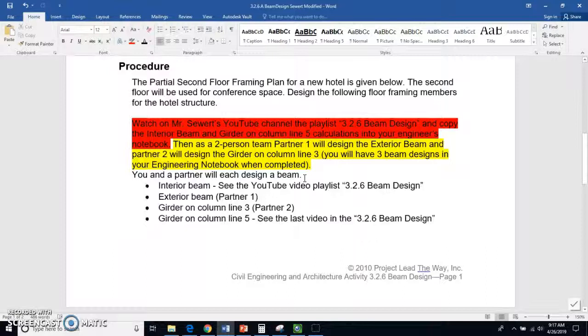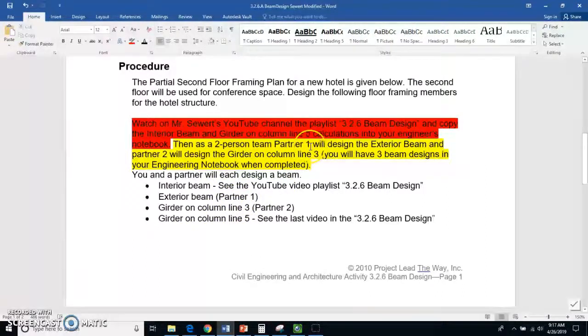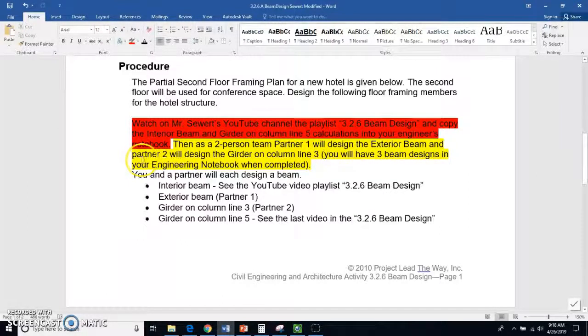You're going to be a two-person team. There's going to be one partner, that person is going to design the exterior beam, and partner two will design the girder on column 3. So in total, you're going to have three beam designs in your engineering notebook when completed.